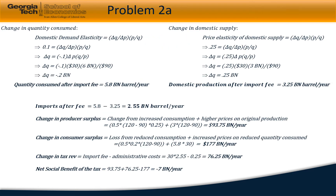In the second problem, we have been provided with the demand and supply elasticity at equilibrium. Using that, we can compute the quantity demanded after the import fee is imposed to be 5.8 billion barrels per year, a reduction of 0.2 billion barrels. The resulting domestic production is 3.25 billion barrels per year, an increase of 0.25 billion barrels. Therefore, imports now fell to 2.55 billion barrels per year.